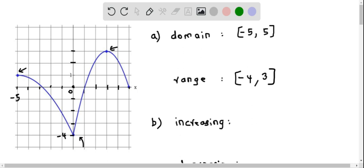Now let us determine the increasing intervals of this graph. We say that an interval is increasing when, as x increases, y also increases. So clearly, starting from x equal to 0 to x equal to 3, we see that the function is increasing — it keeps going up as x moves right. So the increasing interval is (0, 3).